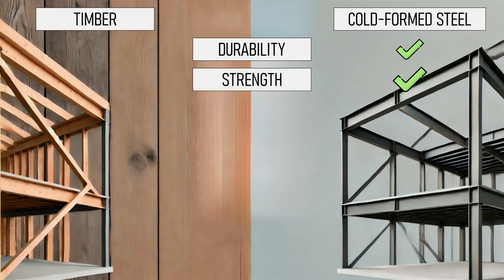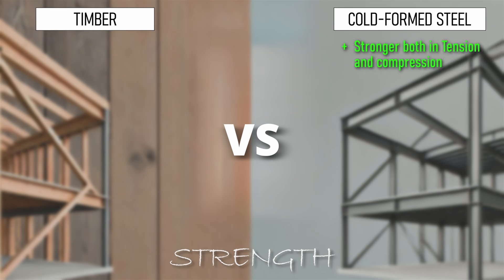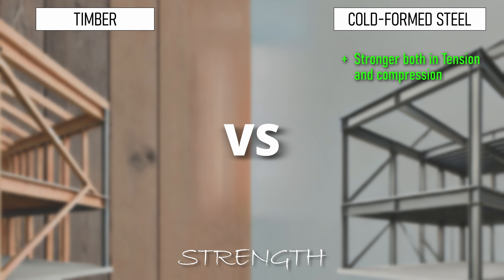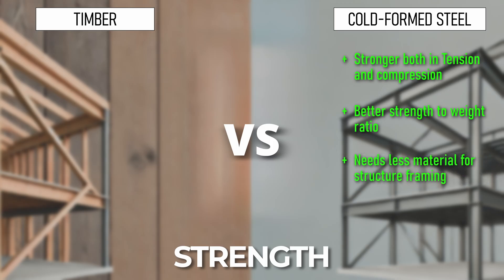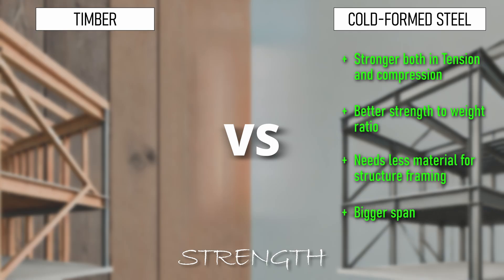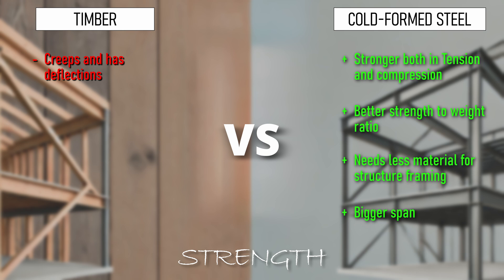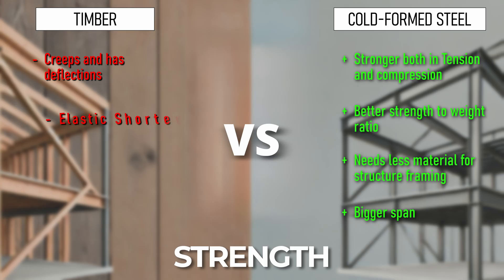Strength is another area where cold-formed steel typically wins out, as it's stronger in both compression and tension. When talking about strength-to-weight ratio, cold-formed steel will almost always win — it's a lighter structure leading to similar or greater strength. You can have a lot less material in a cold-formed steel frame, and if aiming for similar span ratios, you can span much further with less supports. Timber is not weak — it can get quite strong — but on a strength-to-weight ratio it's typically worse. Timber also creeps under load, similar to concrete, meaning you get additional deflections over time, which you don't have with cold-formed steel.